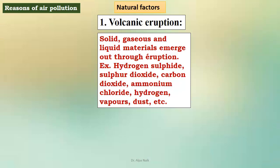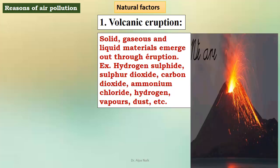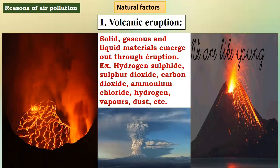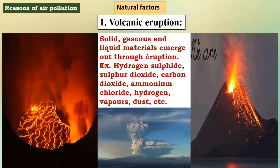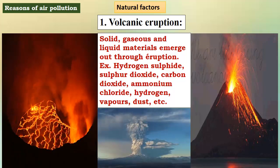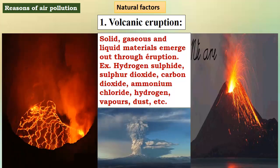What are the main reasons for air pollution? The natural reason is volcanic eruption. When a volcano erupts, solid, gaseous and liquid material emerges through the eruption. It has hydrogen sulfide, sulfur dioxide, carbon dioxide, ammonium chloride, hydrogen vapor and dust — they all get mixed into the air.